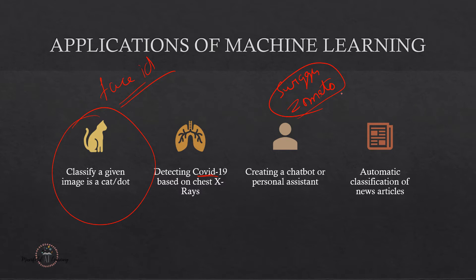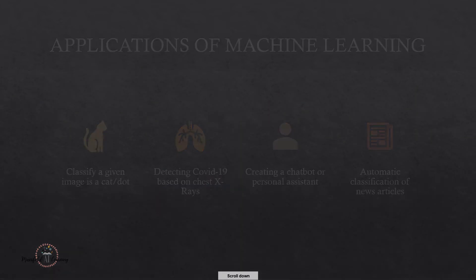These are all applications of machine learning. Another classic example is if I have a news article and I want to classify it into one of several categories — that is also an application of machine learning. This is just a representation of some of the applications we have in machine learning. You can think about any problem in your industry or business and consider how machine learning techniques can make your life easier.